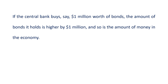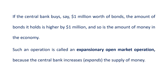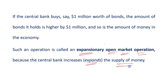If the central bank buys, say, $1 million worth of bonds, the amount of bonds it holds is higher by $1 million and so is the amount of money in the economy. Such an operation is called an expansionary open market operation because the central bank increases or expands the money supply.